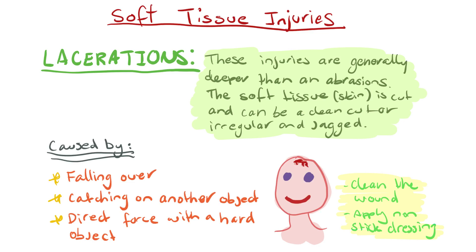The next injury is a laceration. Lacerations are generally deeper than an abrasion — the skin is cut and can be a clean cut or irregular and jagged. They can be caused by falling over, catching on another object, or direct force with a hard object. Treatment involves cleaning the wound and applying a non-stick dressing. If the laceration is quite deep, apply pressure before the dressing, and the athlete may need to seek further medical attention for stitching, depending on the length and depth.